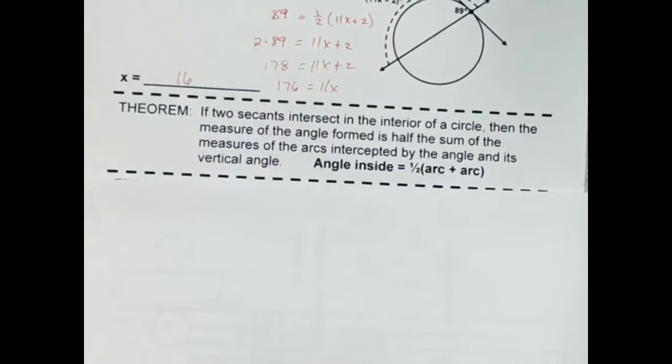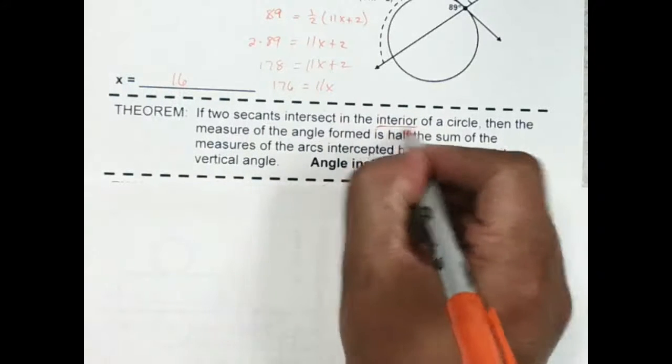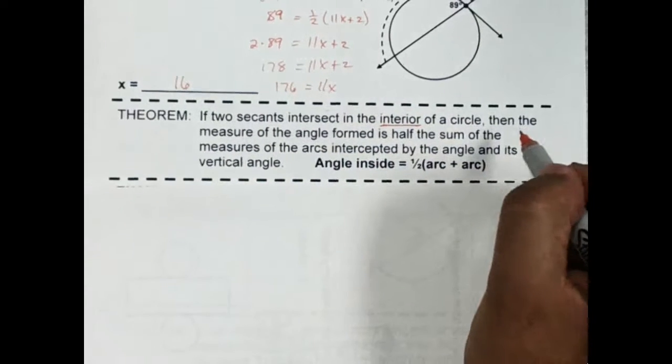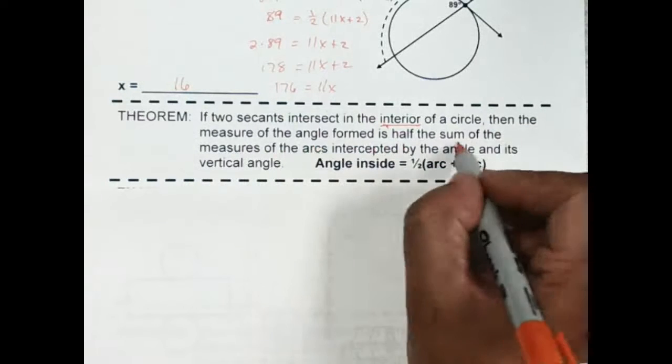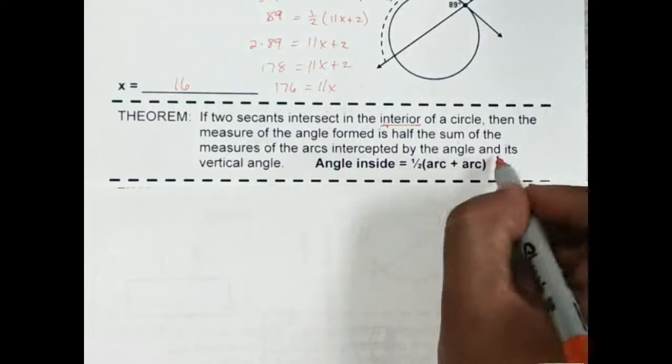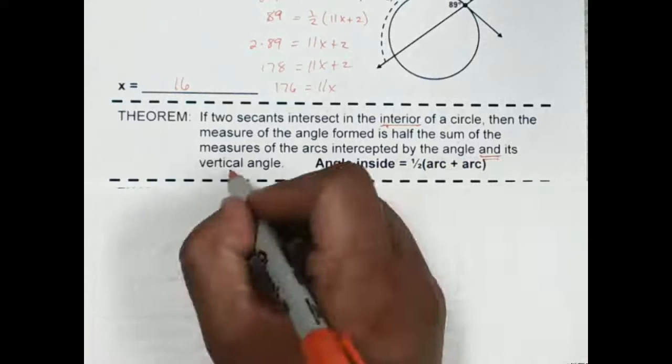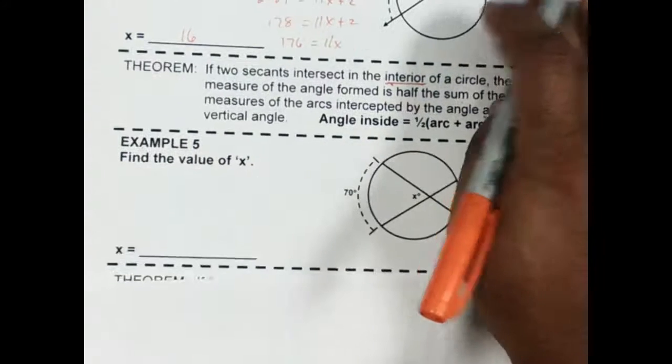All right, the next type of problem is if you have two secants that intersect in the interior of a circle. That's going to be important. If it's in the interior, then the measure of the angle formed is half the sum of the measure of the arcs intercepted by the angle and its vertical angle. So I'll show you a picture and example of what that means.